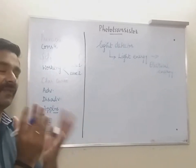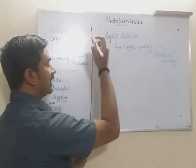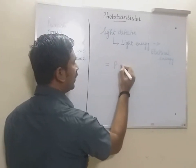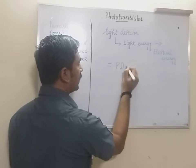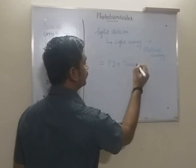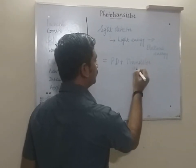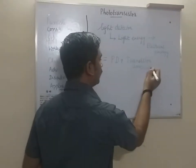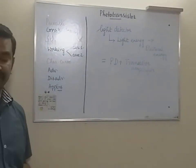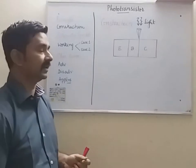So what is the difference between a phototransistor and a photodiode? A phototransistor is equal to a photodiode plus a transistor amplifier. This is what the phototransistor is, and we will go into the construction part of the phototransistor.